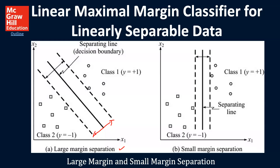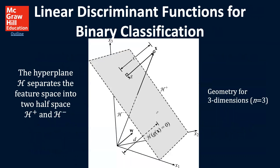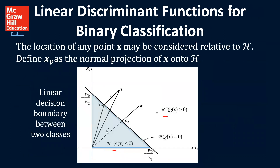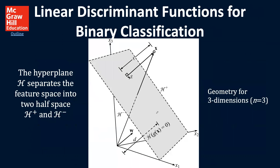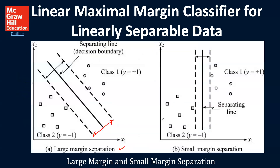Welcome back to our lecture on support vector machines. We're now into the second part of this lecture, and we've been talking about how we can transform things into a hyperplane, which can be a little bit conceptually difficult to get our arms around. So we have an H plus, we have an H minus, and then we have this middle ground that we're thinking about, trying to maximize and have the largest margin.